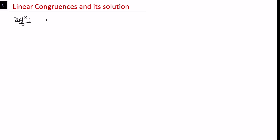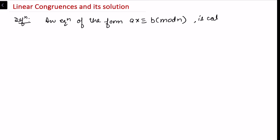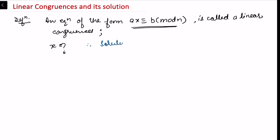In this video we'll be talking about linear congruence and its solution. An equation of the form ax ≡ b (mod n) is called a linear congruence. We have a single variable x whose degree is one, so we call this a linear congruence, just as we define linear equations. We are interested in knowing for what value of x this equation holds true — that is, finding x₀ such that ax₀ ≡ b (mod n).